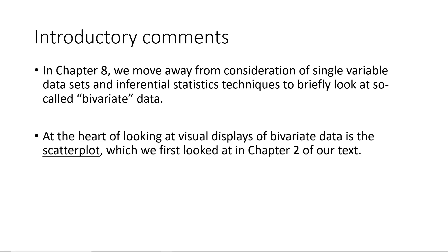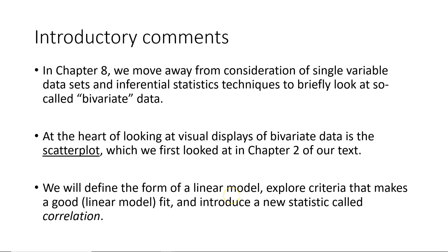we are moving away from consideration of single-variable data sets and inferential statistics techniques to briefly look at so-called bivariate, that is, two-variable data. At the heart of looking at visual displays of bivariate data is the scatterplot, which we first looked at in Chapter 2 of our text. We will define the form of a linear model, explore criteria that makes a good linear model fit, and introduce a new statistic called correlation.